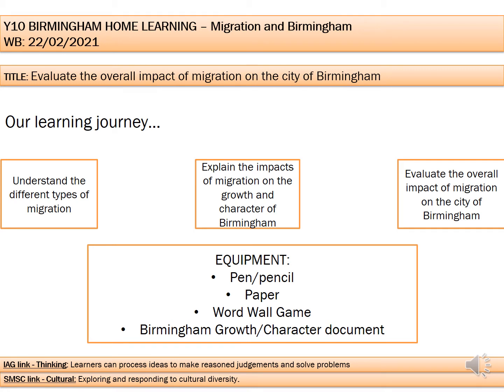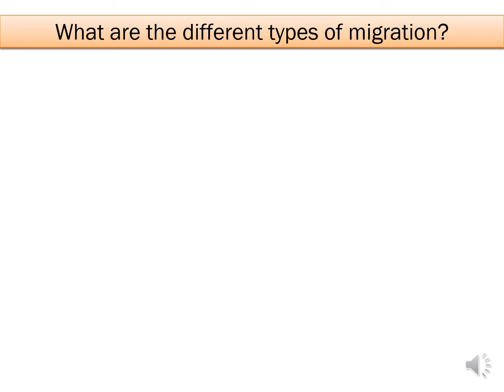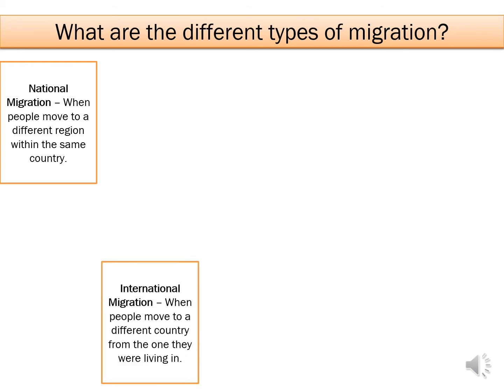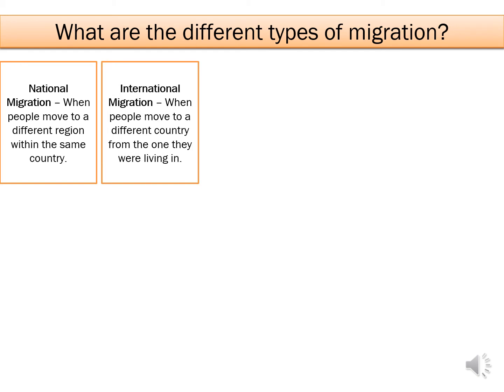Moving on to our first part of the lesson. There are five different types of migration that you need to know, because we see so much in the news about different types of migration and how migration is bad and how people choose to migrate — when actually this isn't always the case. There is national migration, when people move from one part of the country to another. For example, Miss Davis moving from Sheffield to Birmingham is an example of national migration. You also have international migration, when people move to a different country from the one they were originally living in.